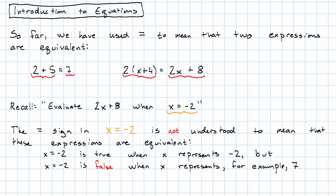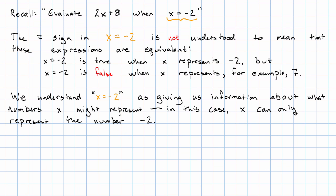How do we understand it? We understand this statement as giving us a piece of information about the value of x. In the case of x equals -2, we're being told that x can only represent the number -2.